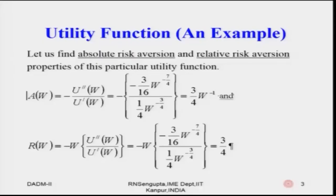In the last slide of the fifth class, I took the utility function U(W) = W to the power one-fourth, and found that non-satiation was applicable and that u double prime is negative. So now let us find the absolute risk aversion property A and relative risk aversion property R of this function.